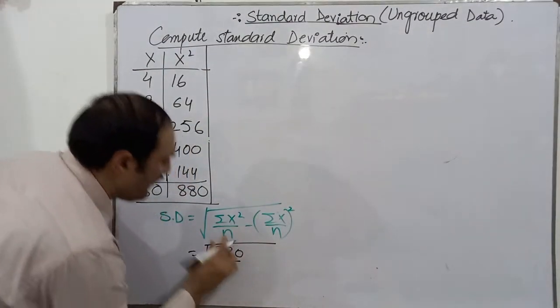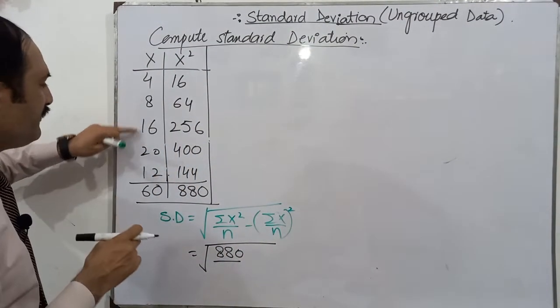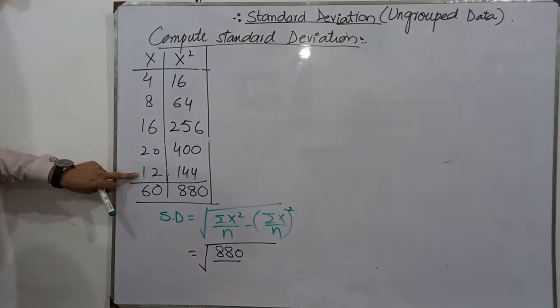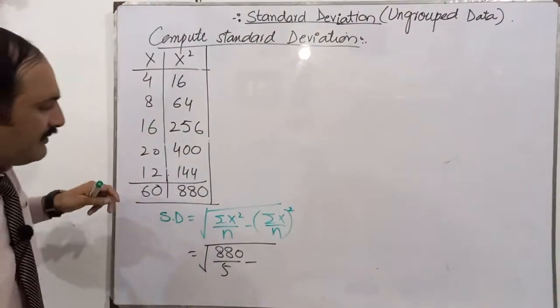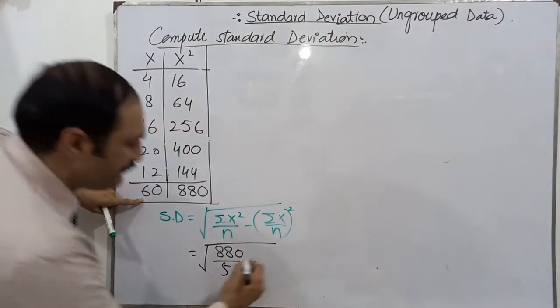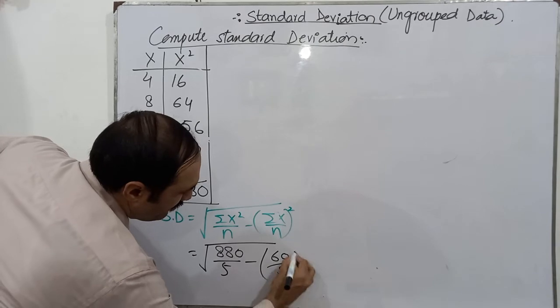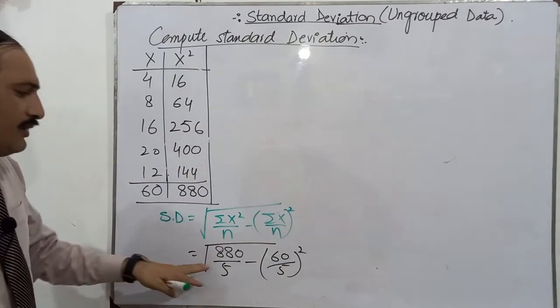880 over n means 1, 2, 3, 4, 5. How many observations? 5. Minus summation x. Summation x is 60 over 5 whole square.